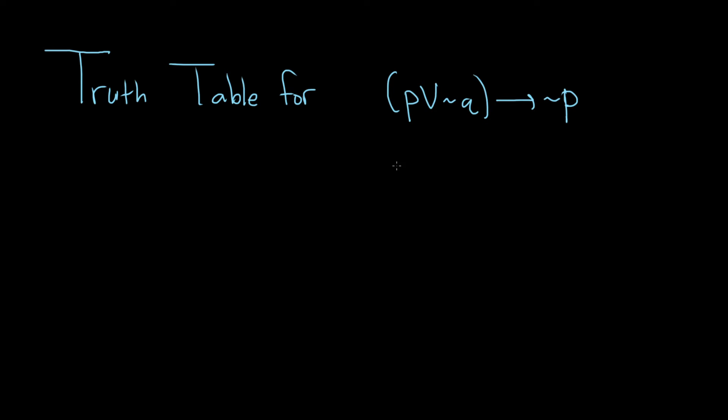Construct a truth table for the following statement. So we'll start by listing all of the possible truth values for P and Q. So we have P and Q.